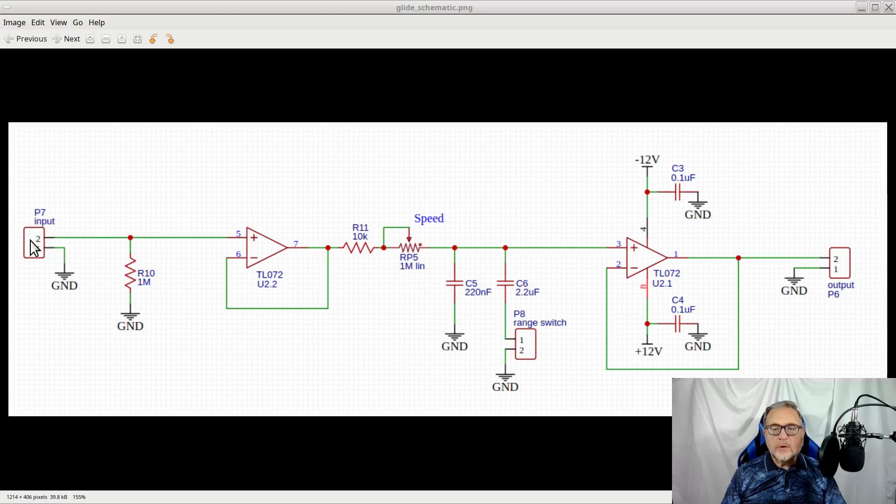The control voltage input goes to an op-amp connected in a voltage follower configuration, basically a voltage amplifier with gain of 1. This provides a high impedance input, forced to 1 meg through resistor R10.